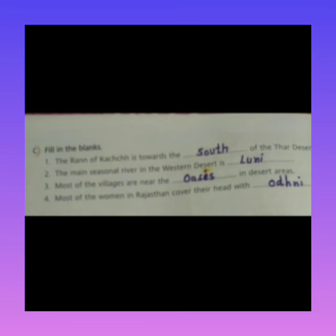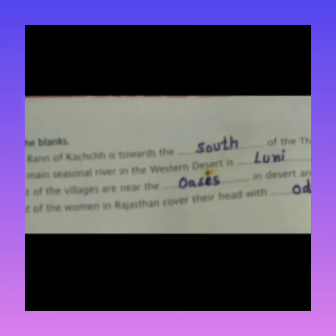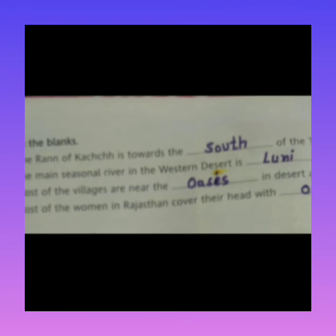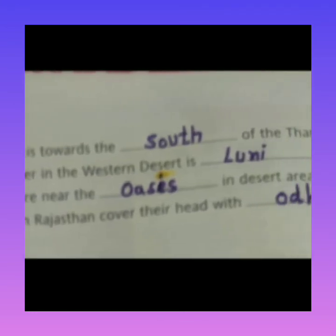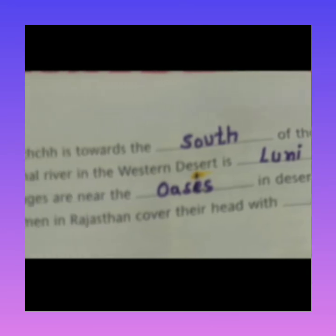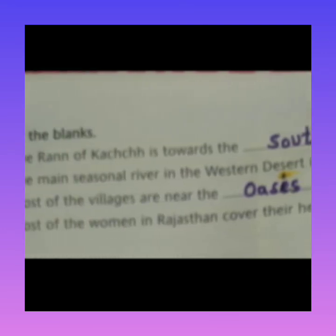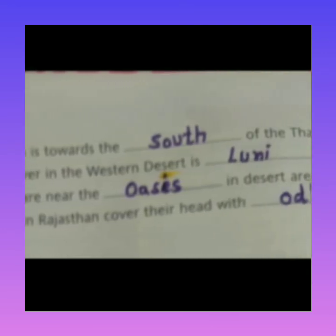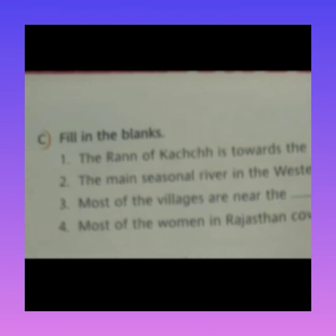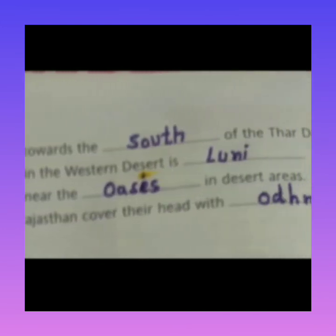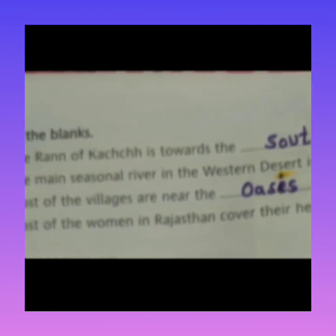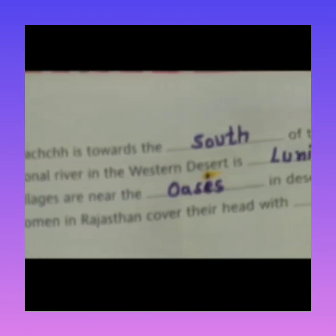Fill in the blank: the Rann of Kutch is toward the south of the Thar Desert — the Rann of Kutch is on the south side of the Thar Desert. Next blank: the main seasonal river in the western desert is the Looni — the main seasonal river in the western desert is the Looni river.